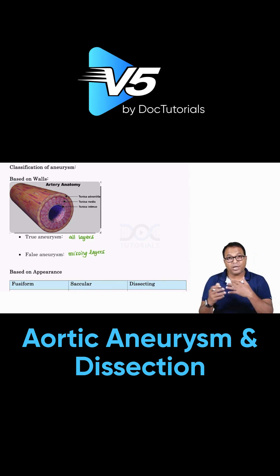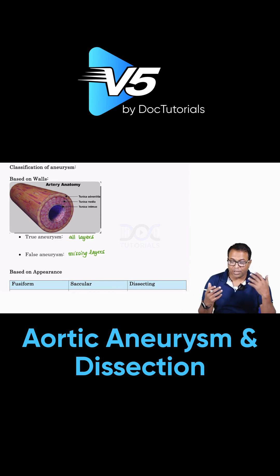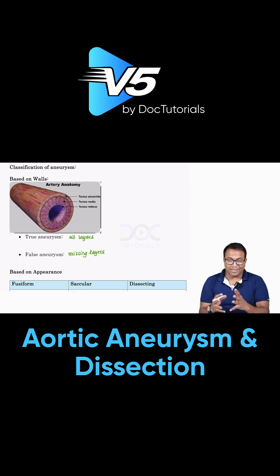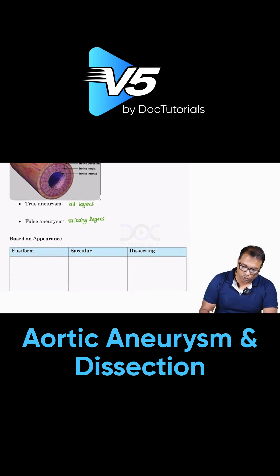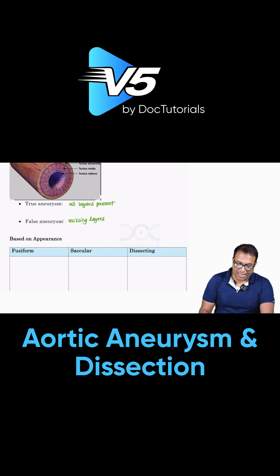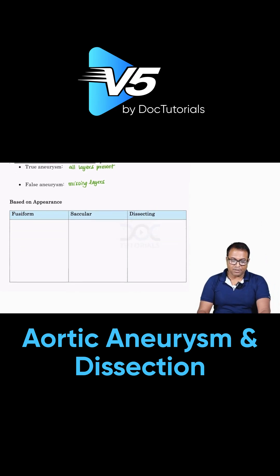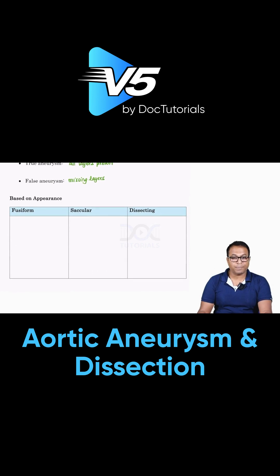An aneurysm without tunica adventitia, or without tunica intima — something like that is called a pseudo aneurysm or false aneurysm. So true aneurysm contains all layers present, while missing layers is called false aneurysm.